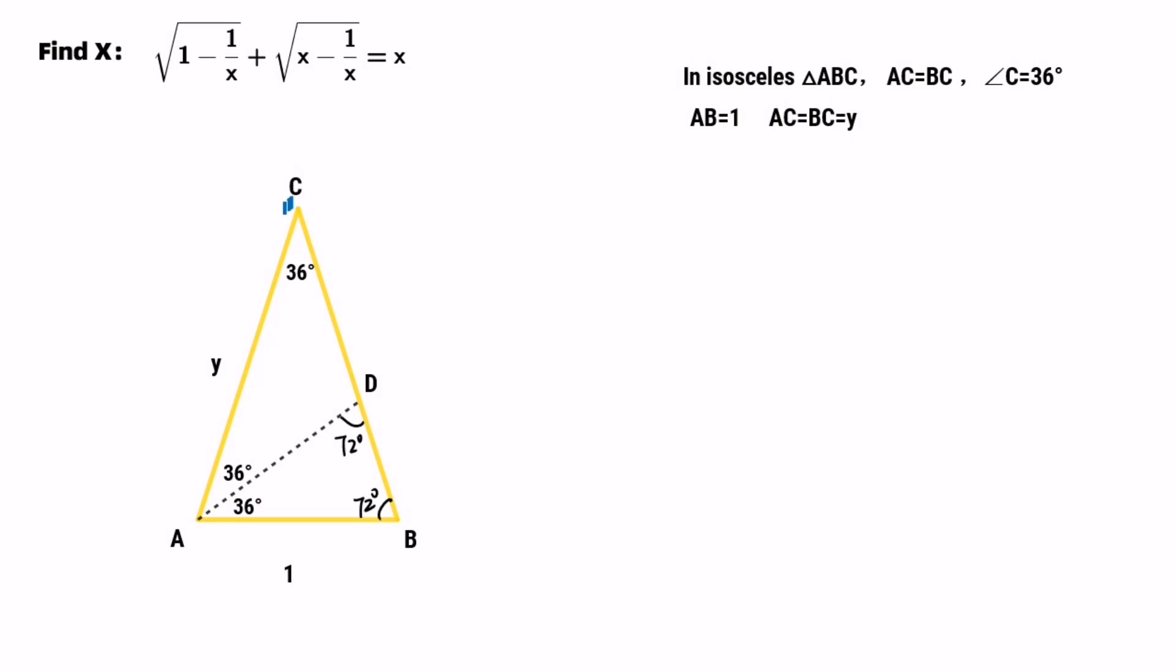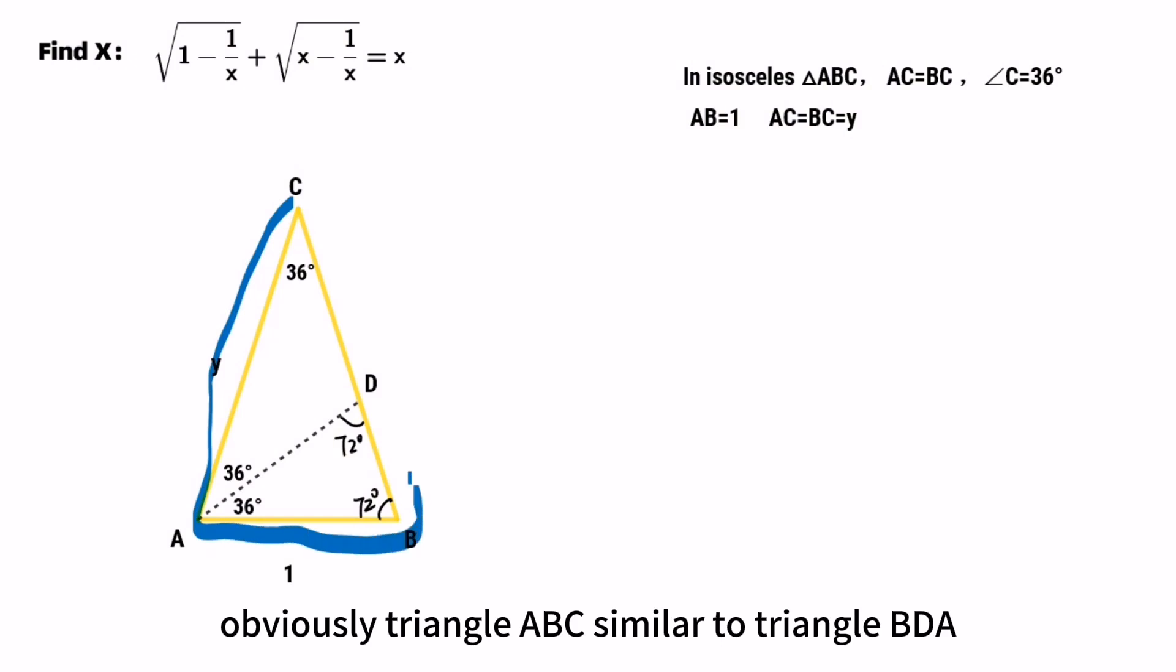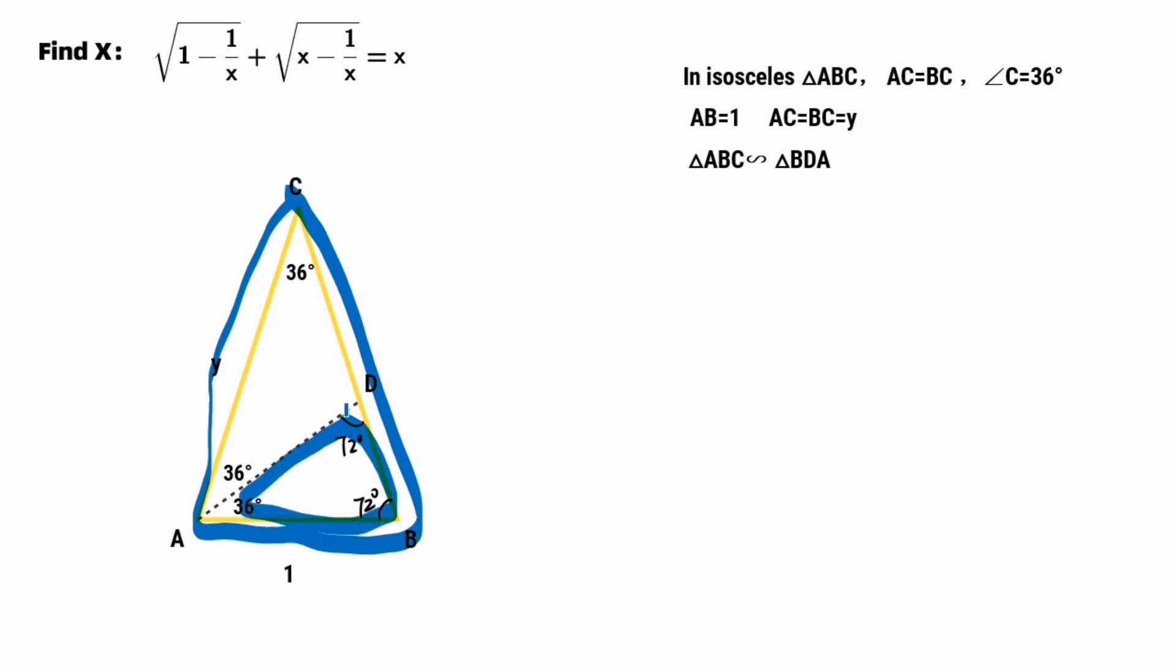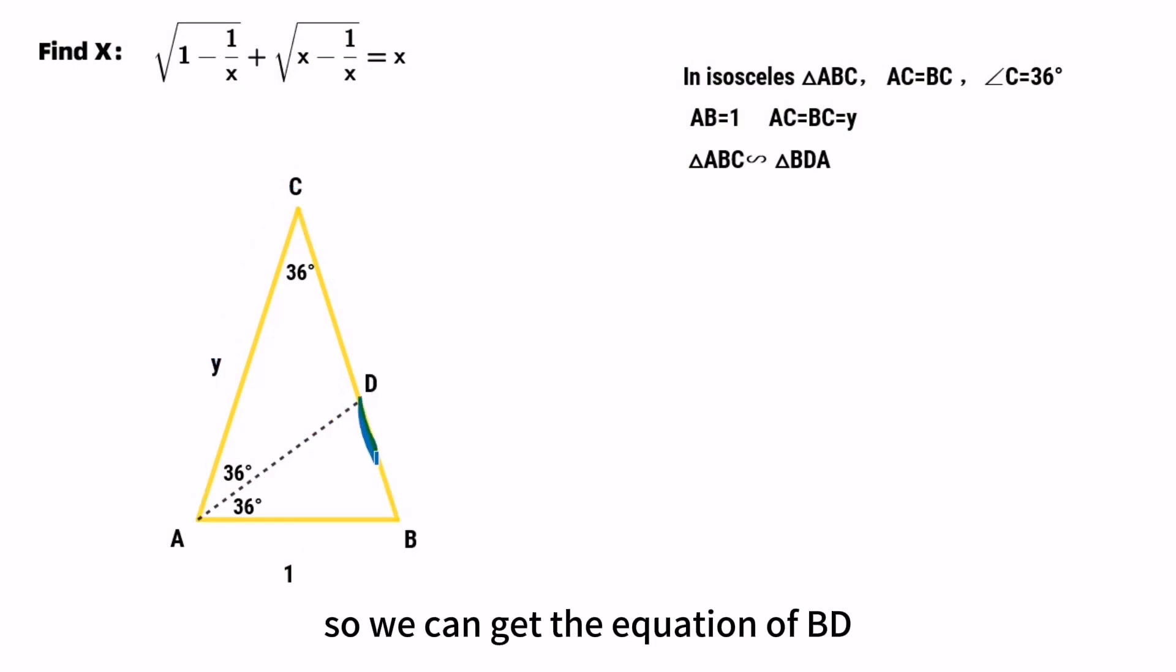Obviously, triangle ABC is similar to triangle BDA. So we can get an equation for BD. BD over AB equals AB over AC, which means BD over 1 equals 1 over Y. So BD equals 1 over Y.